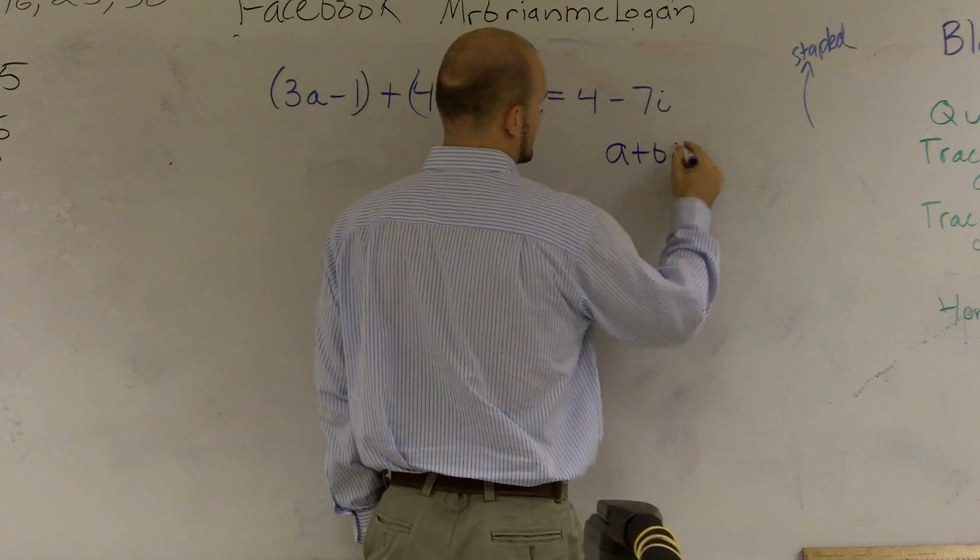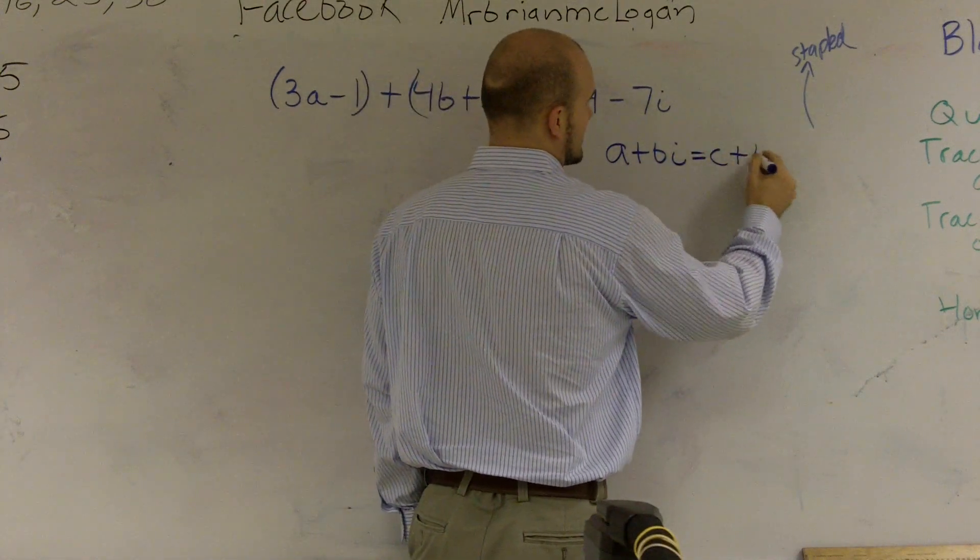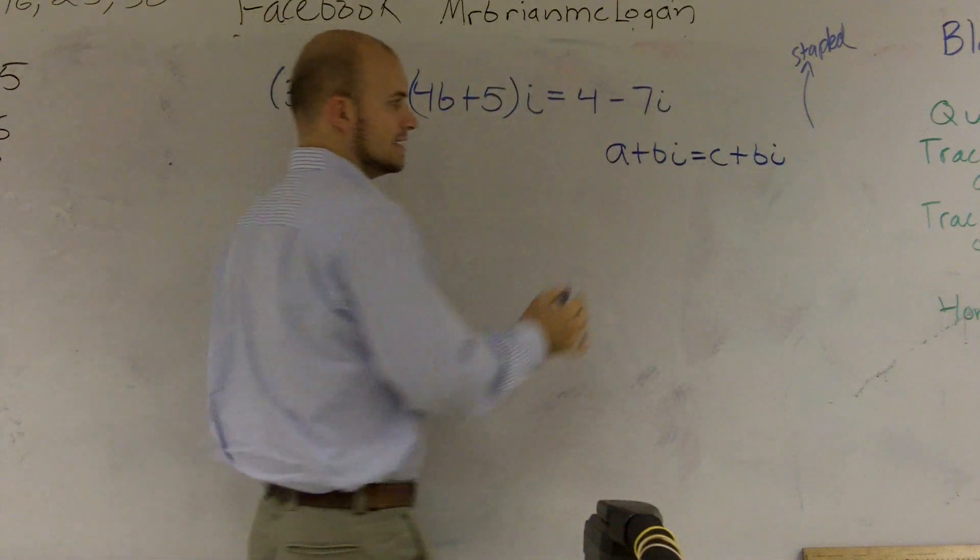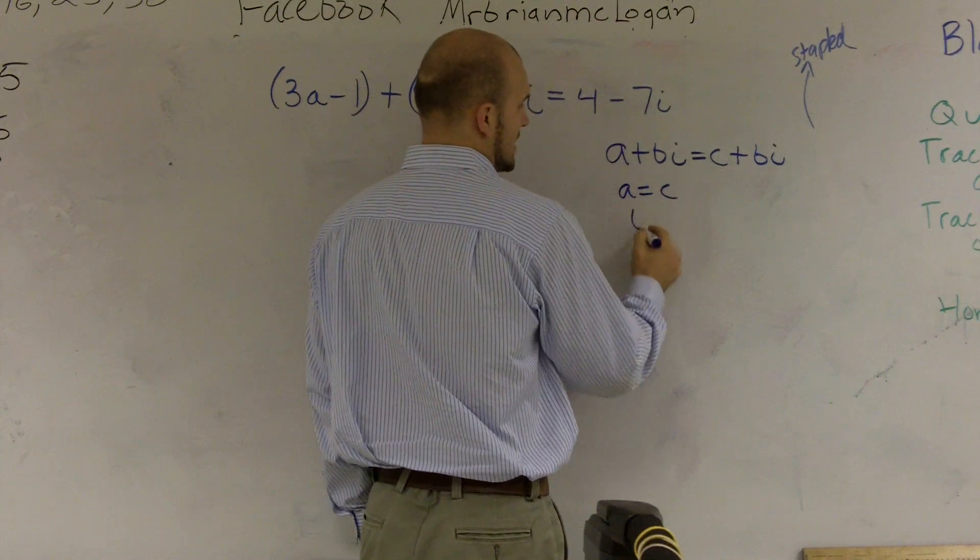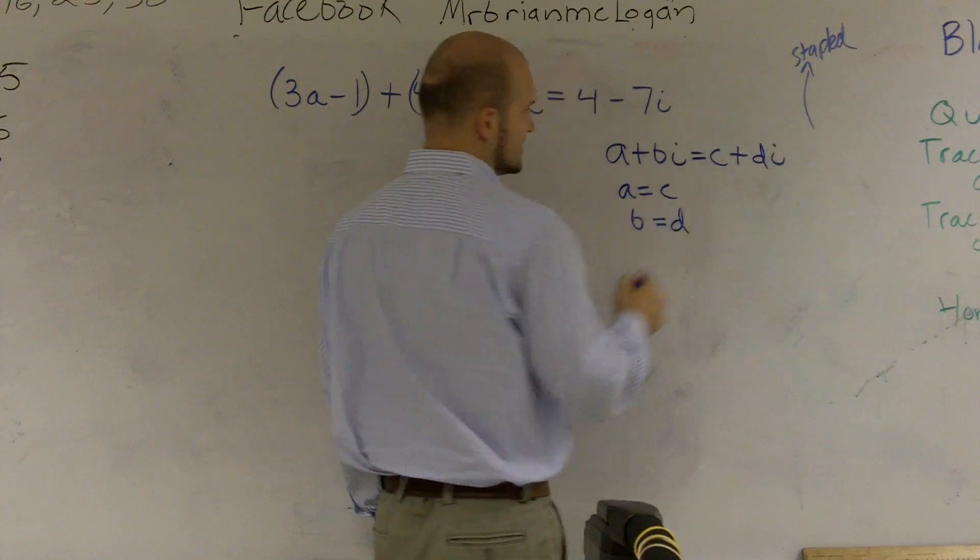a plus bi is equal to another complex number c plus di only if a is equal to c and b is equal to d.